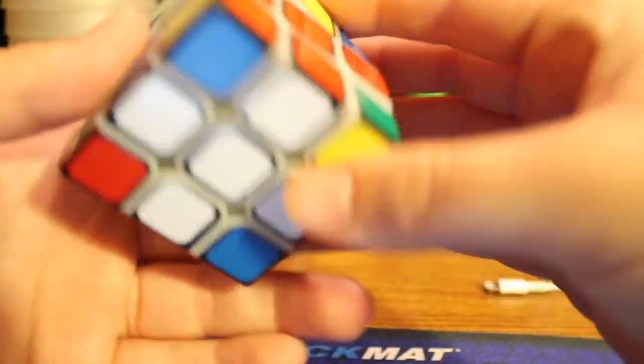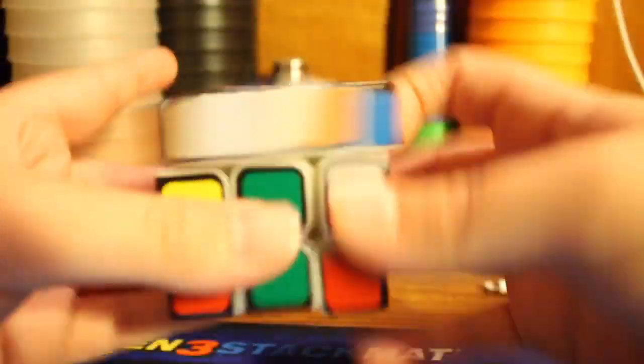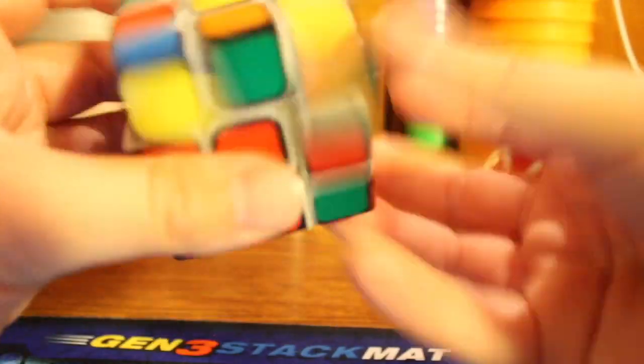And then you're going to go like this. So you've got to find the right piece. There it is. We're going to insert it. There we go. Like that. And then we're going to turn the Rubik's Cube again. And there we go.